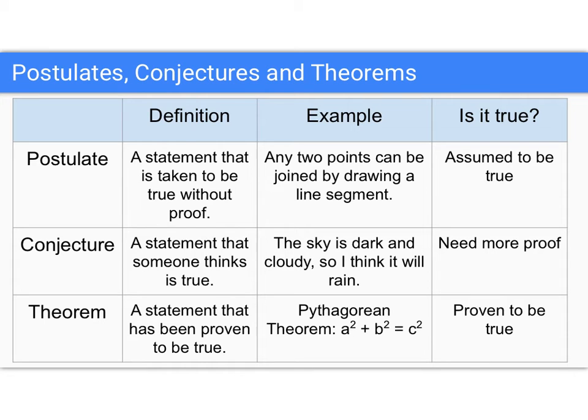Now, here's a few more terms that you're going to encounter in geometry. We have statements, different types of statements, and they have varying degrees of validity or certainty. We have postulates, conjectures, and theorems.